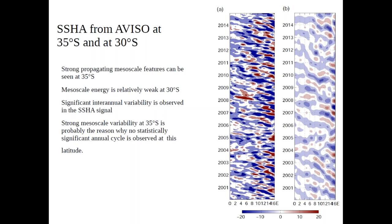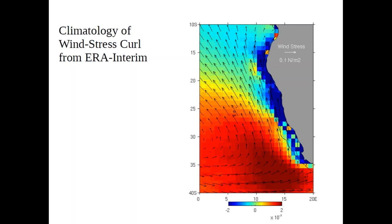To investigate dynamics, wind stress fields from ERA-Interim are used. A climatology of wind stress is shown, with arrows indicating wind direction and color showing wind stress magnitude. The Sverdrup stream function estimated from the ERA-Interim wind stress curl for the same period 2000–2014 is also presented, including the box region where the budget holds.